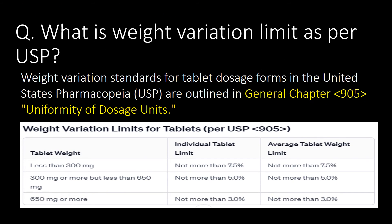What is the weight variation limit as per USP? Weight variation standards for tablet dosage forms in the United States Pharmacopoeia (USP) are outlined in general chapter number 905, titled 'Uniformity of Dosage Units.' You can refer to the table from USP chapter number 905.